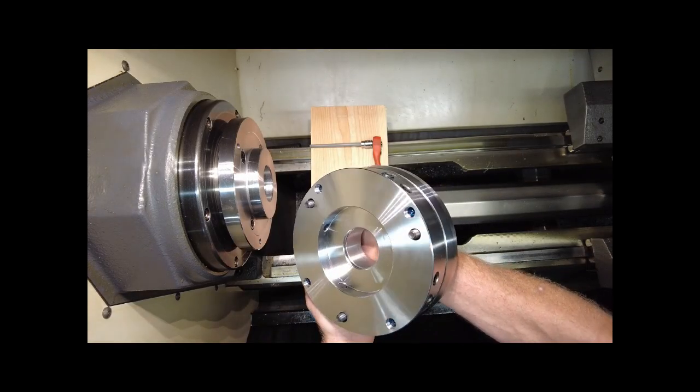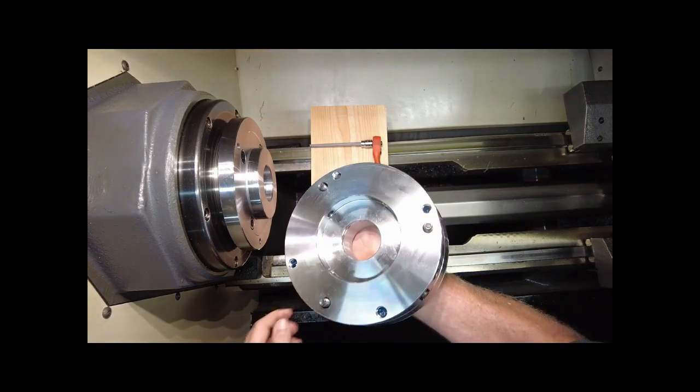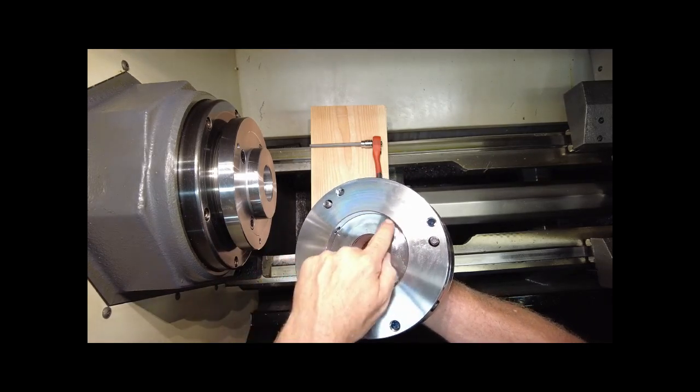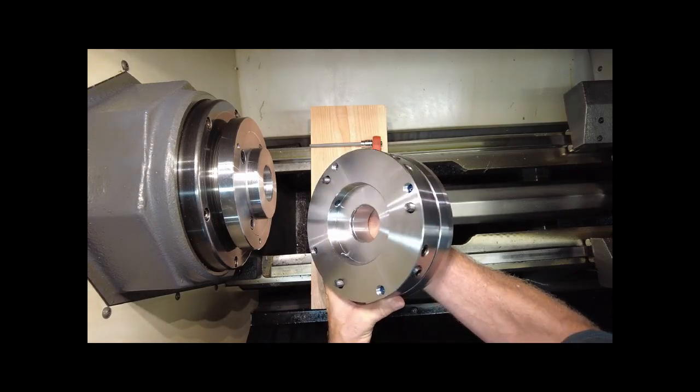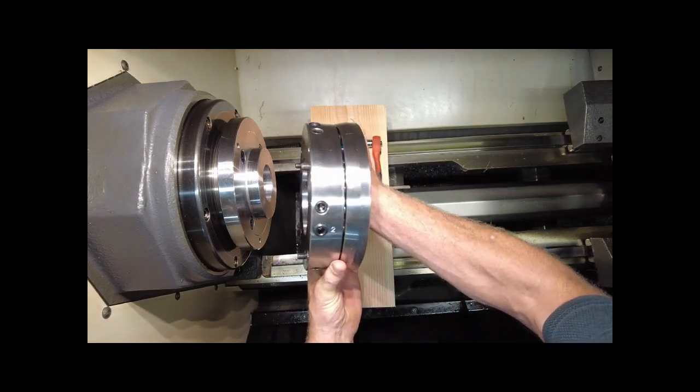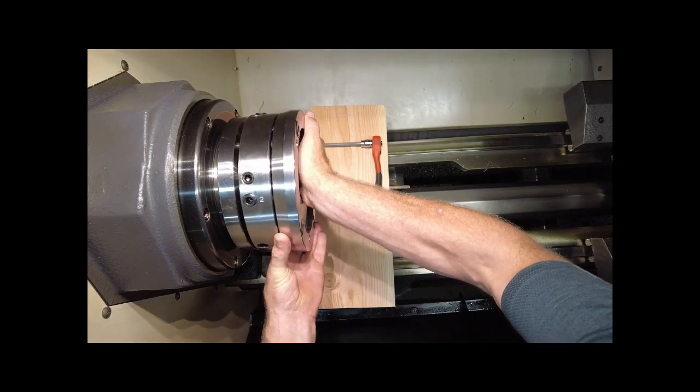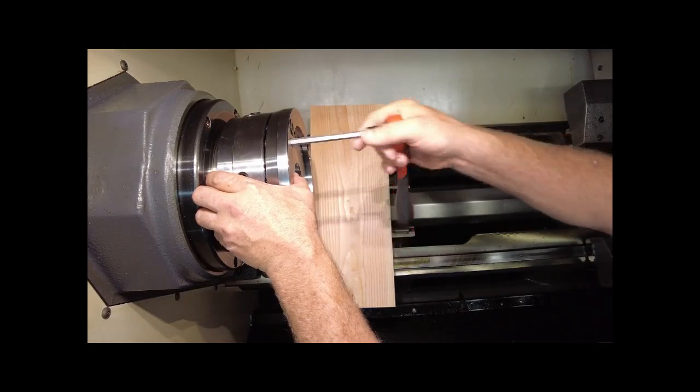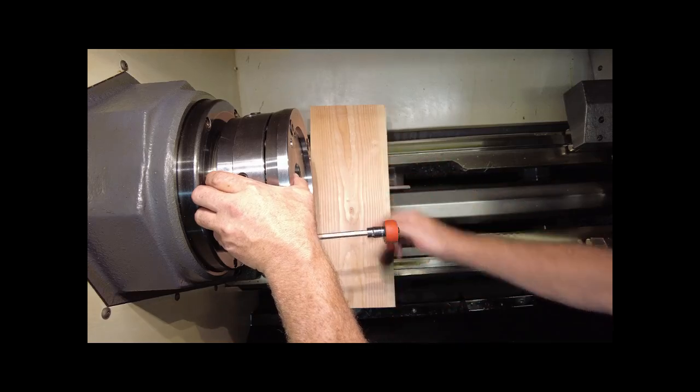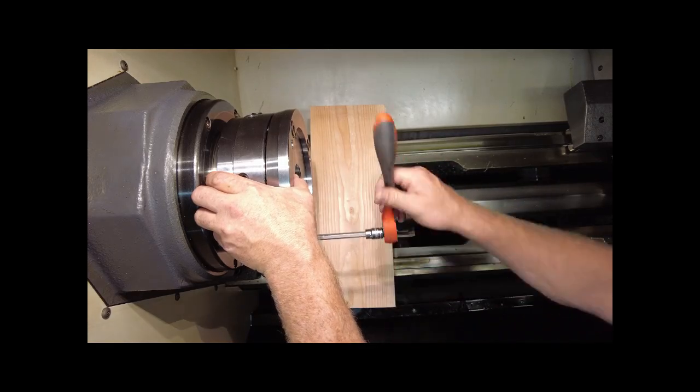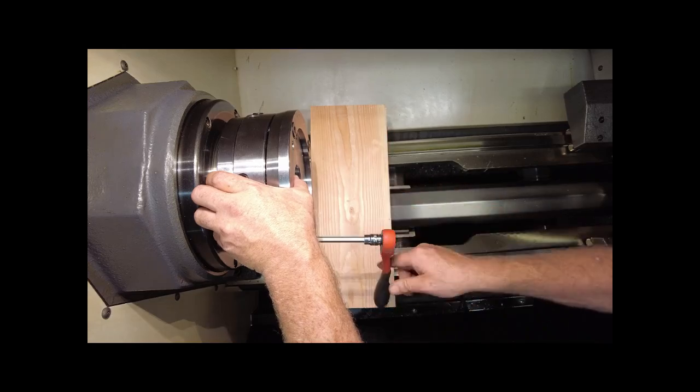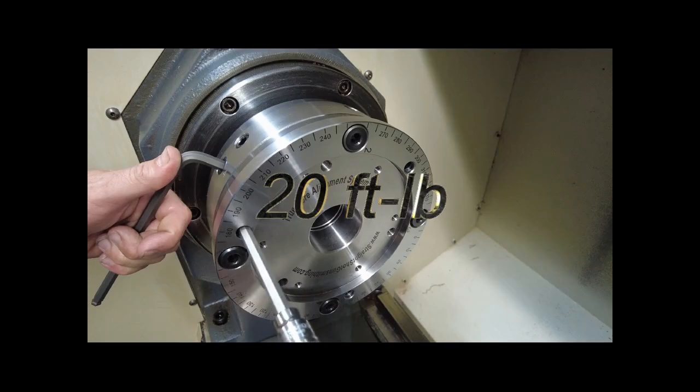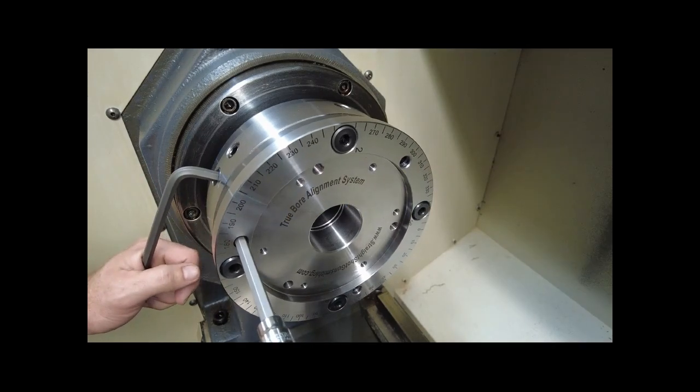Before mounting the Truebore alignment system on the spindle adapter ensure the axial adjustment screws are not protruding into this recess, as it will interfere as you install it on the spindle adapter. Next tighten the three ten millimeter by 1.5 cap screws. Next we will torque the ten millimeter cap screws that hold the Truebore to the spindle adapter.